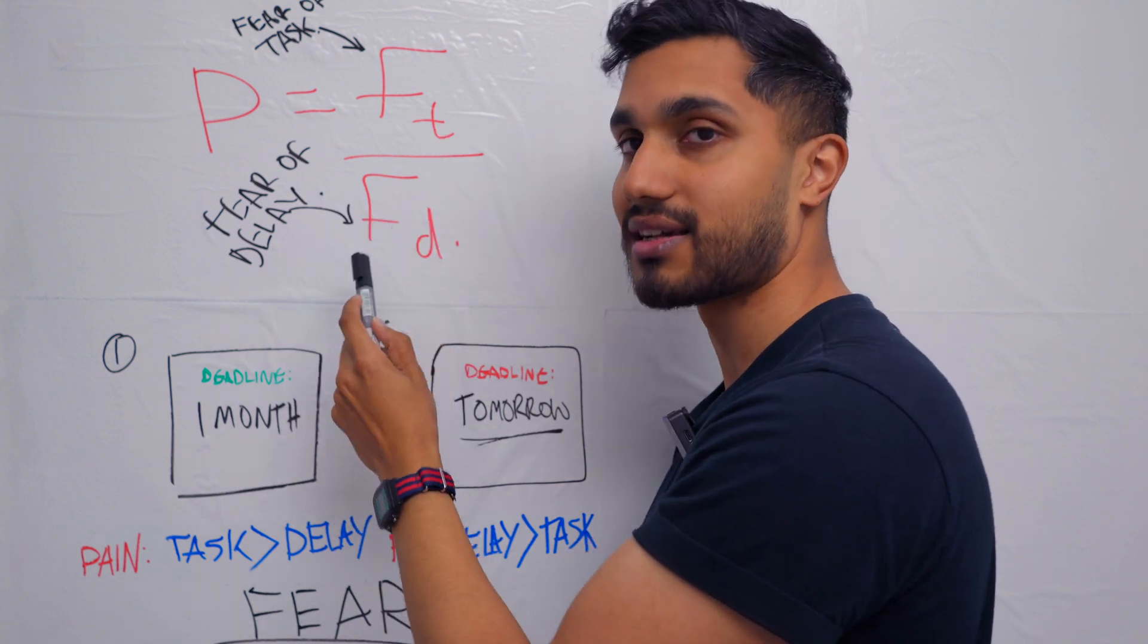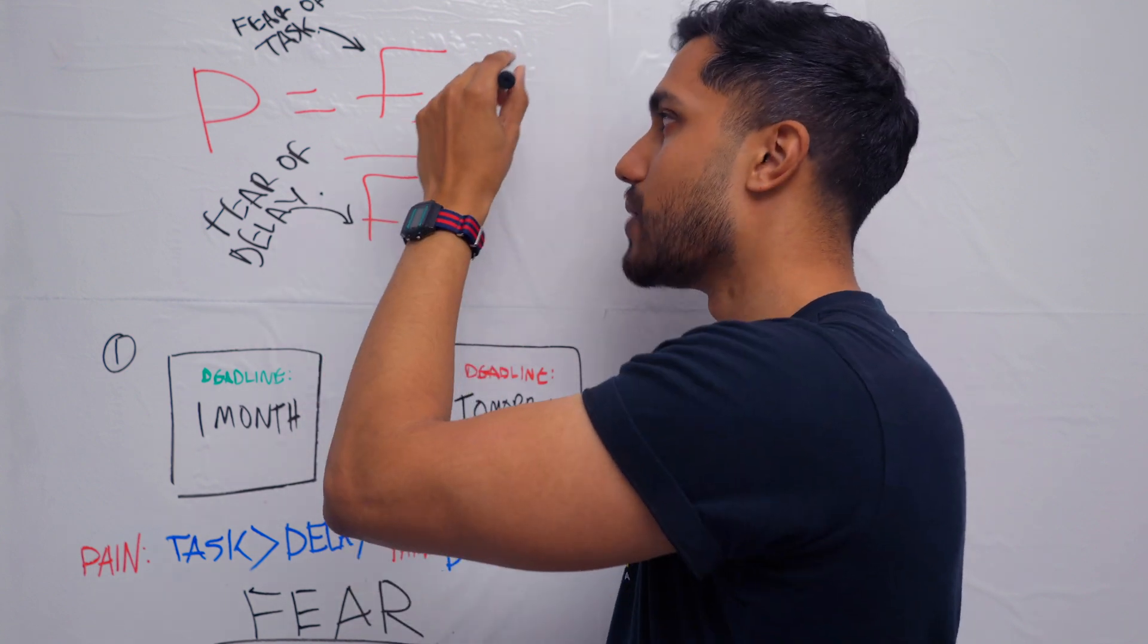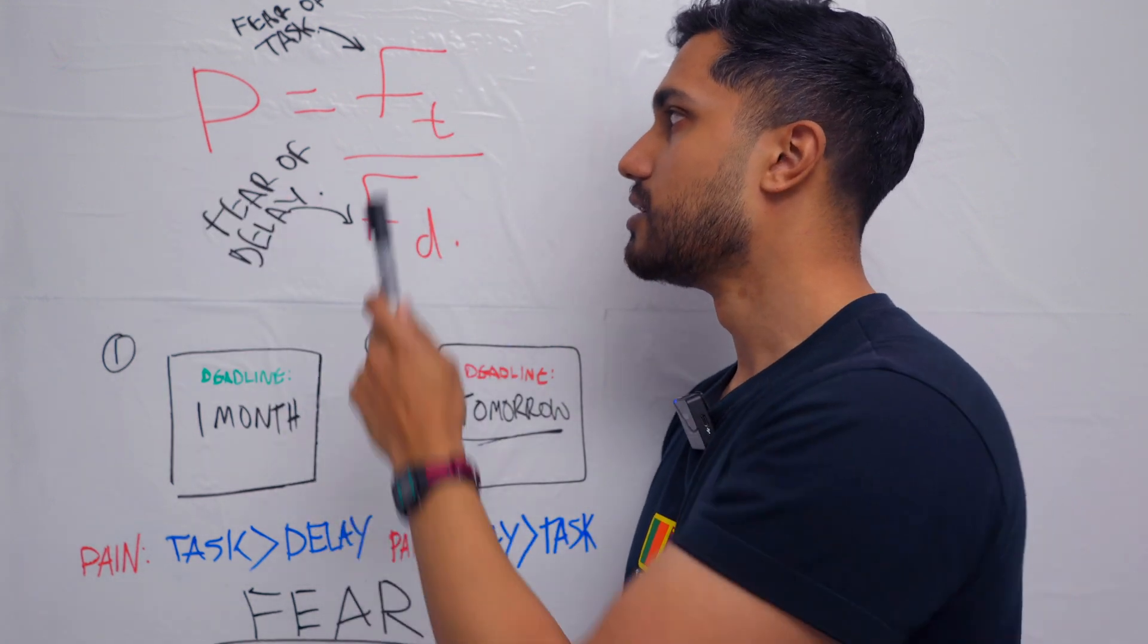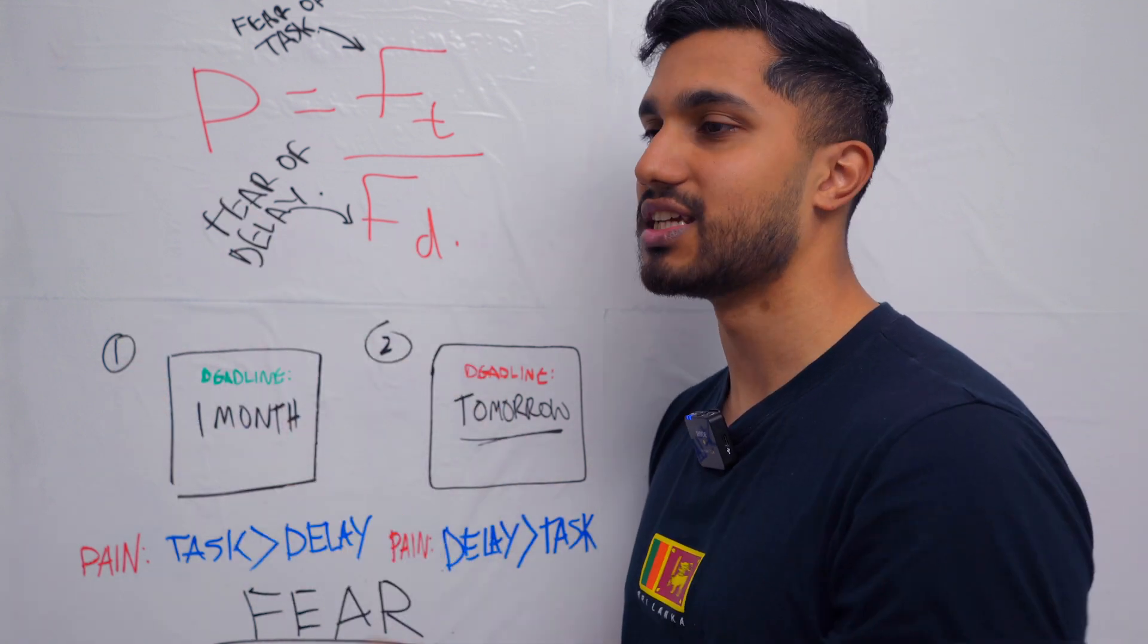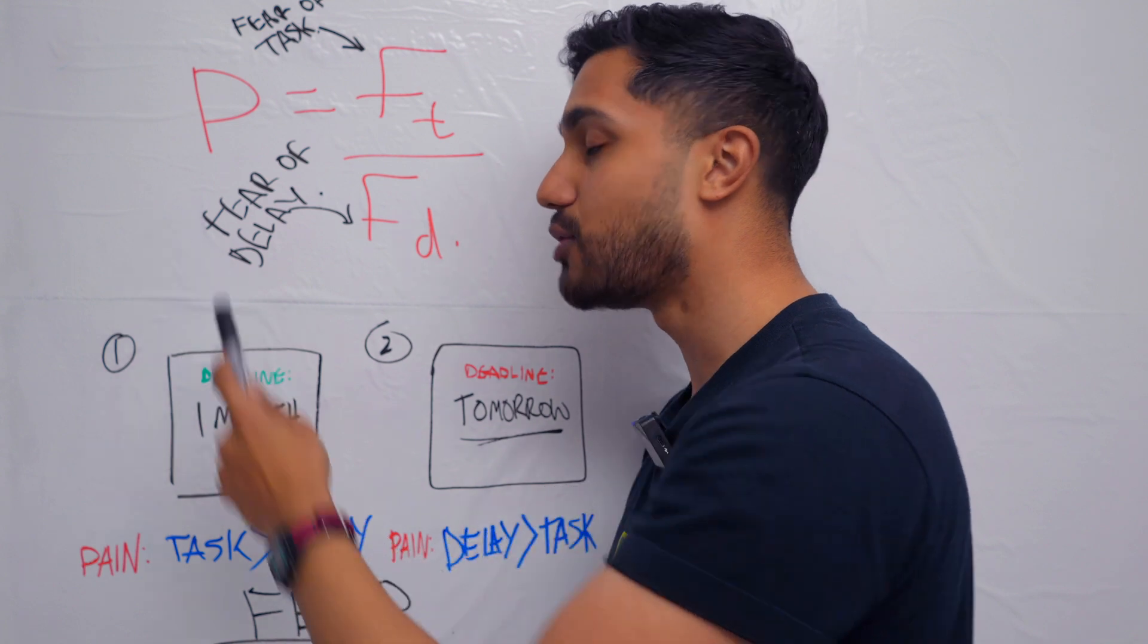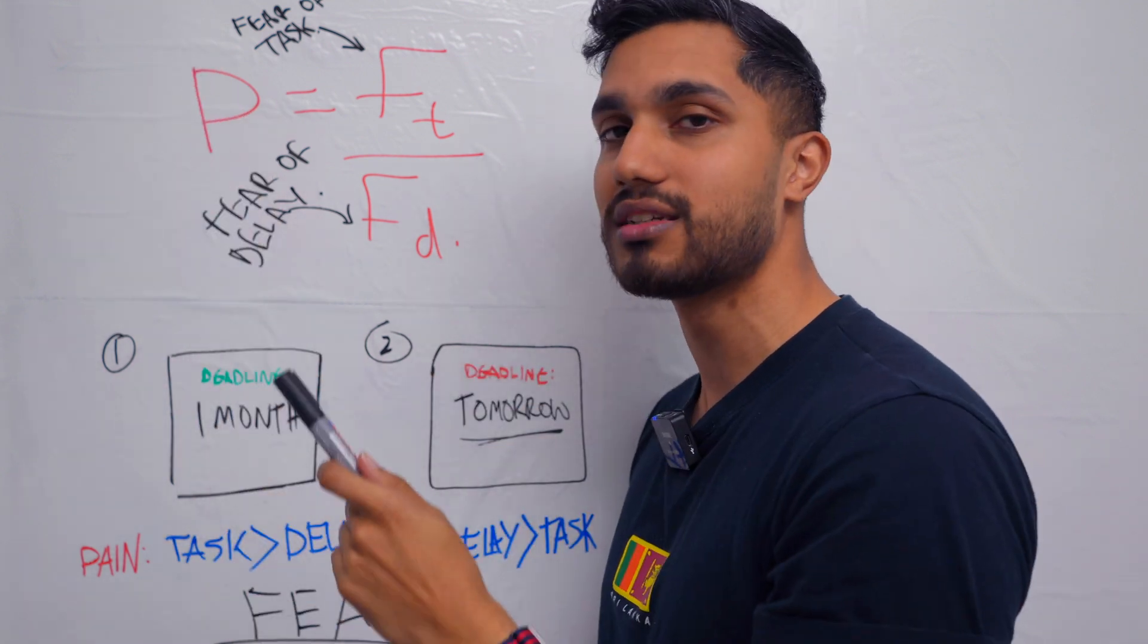So if you have enough fear of the delay, the outcome of procrastinating, and you're scared of it, genuinely, you can do any task immediately. We don't make logical decisions. Our brains are not designed to make decisions based on weighing up pros and cons. You know, logically, you should do all of these things, but you don't do it. Why? Because motivation is actually related to your emotions.